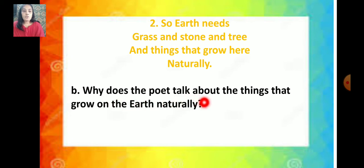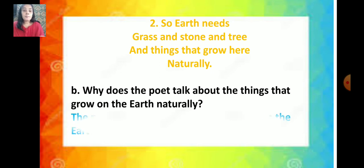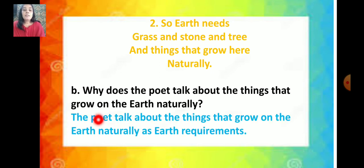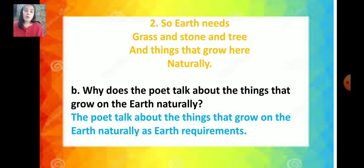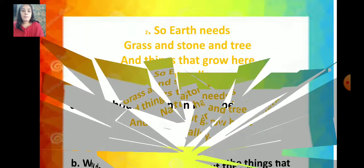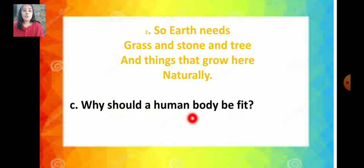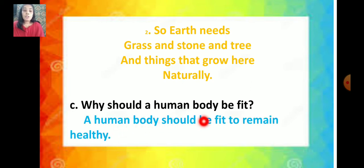B question: why does the poet talk about the things that grow on earth naturally? The poet talks about them because they are the requirements of the earth. C question: why should a human body be fit? Your human body should be fit to remain healthy. In the same way, earth also needs all its requirements to remain fit and healthy — to be a clean earth. That is why we should save the earth.